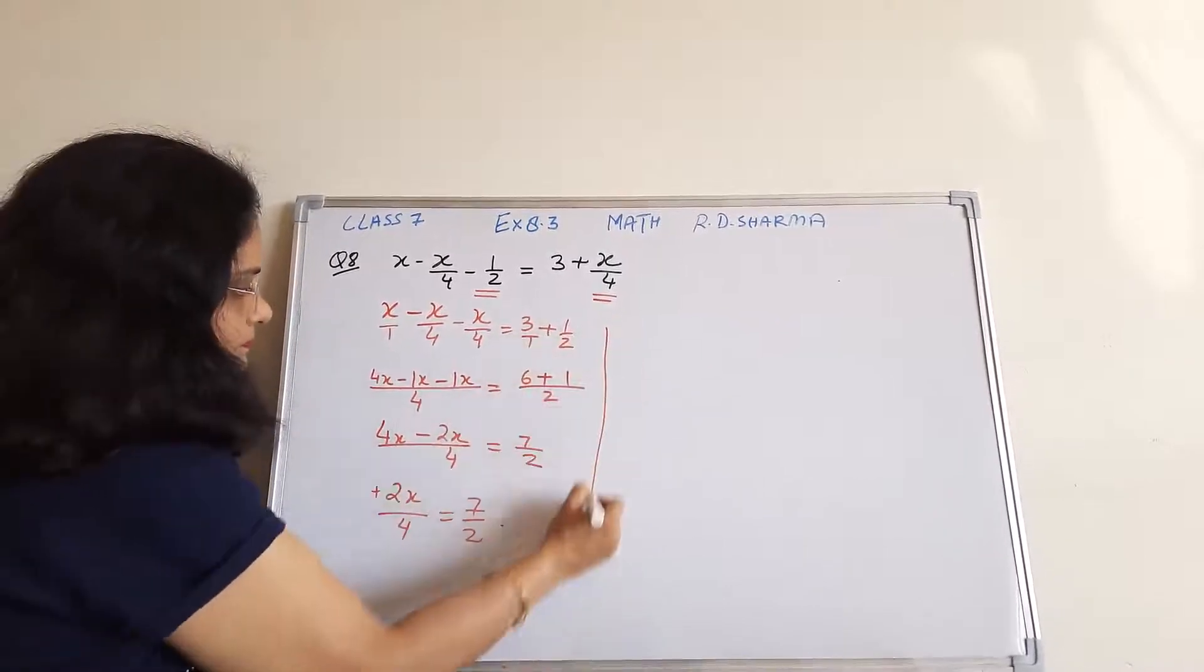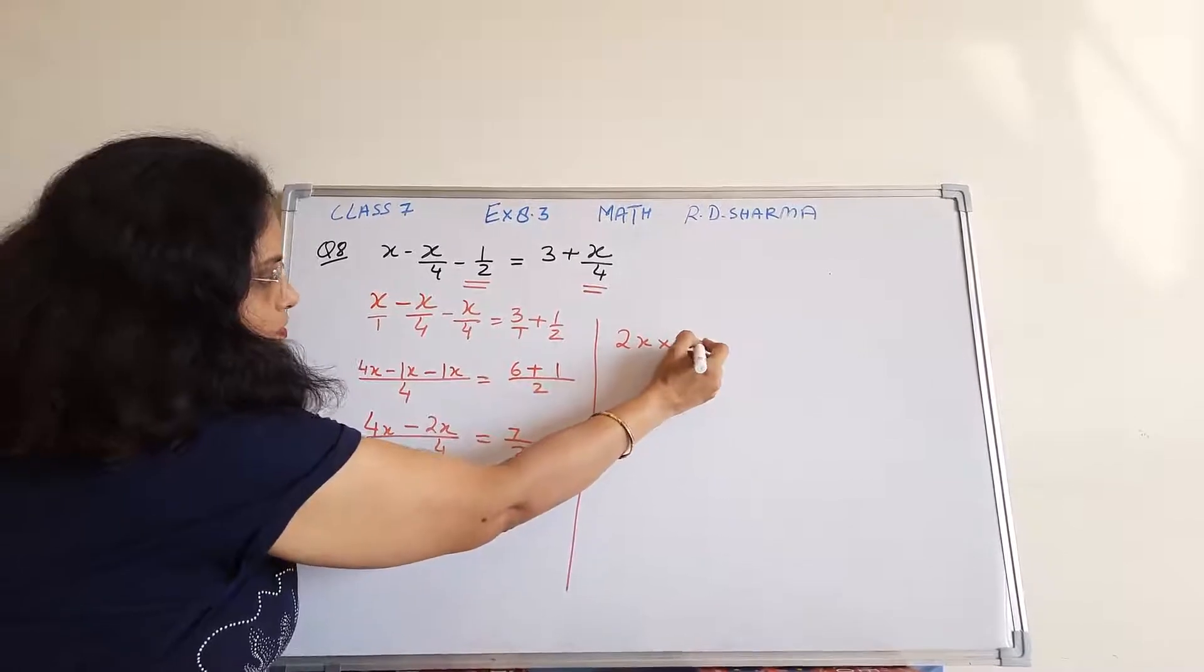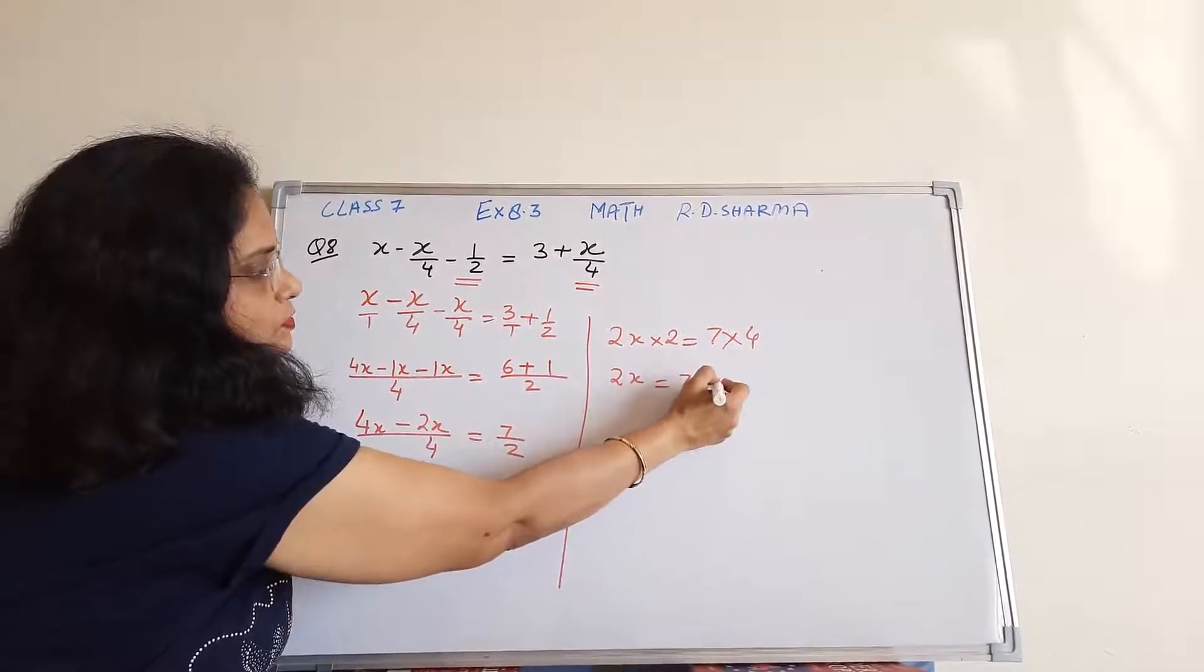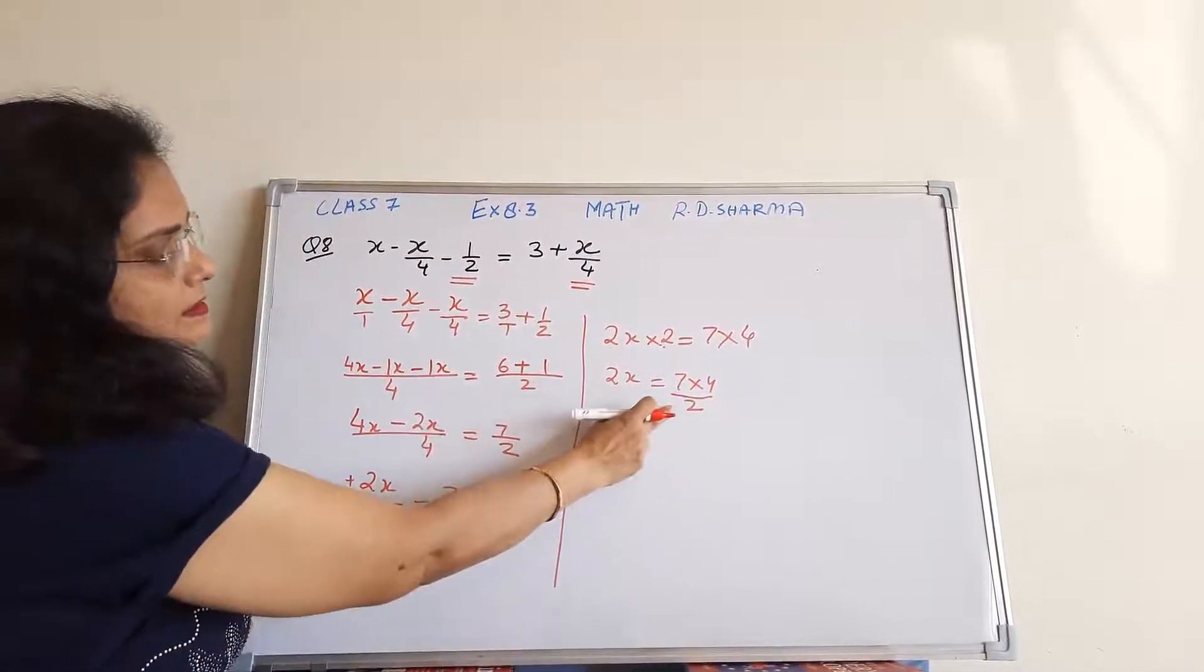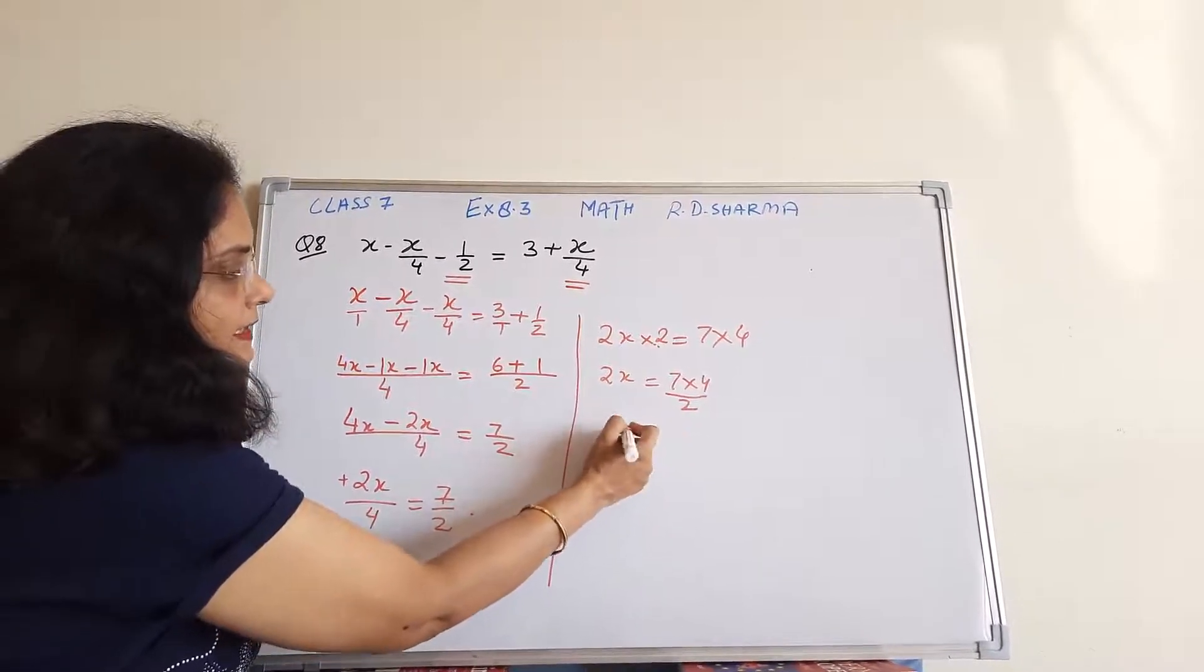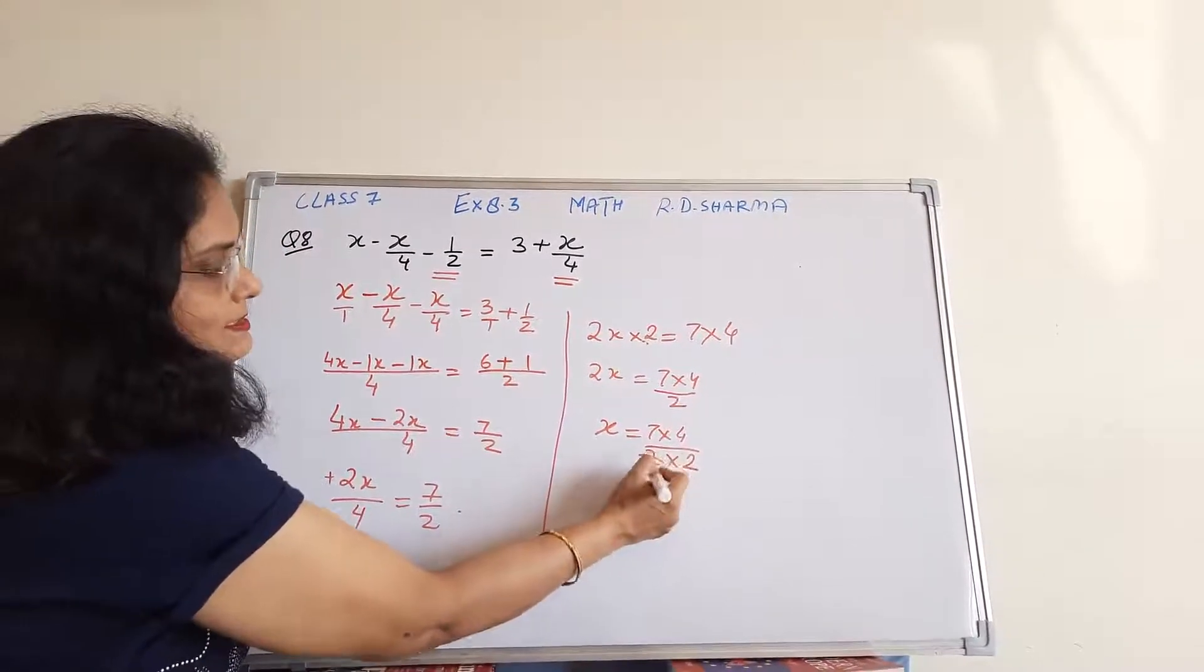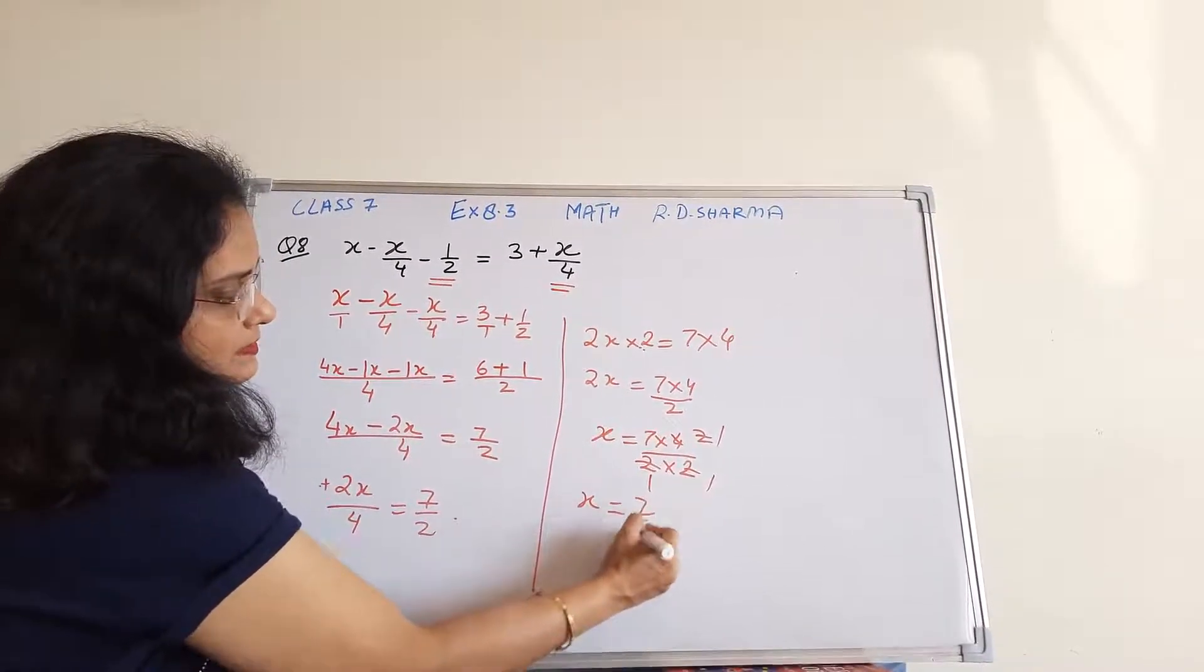Now we will cross multiply. 2x multiplied by 2 is equal to 7 into 4. This 2 will come on the right hand side in the division. Then x becomes 7 into 4 upon 2 into 2. So this gets cancelled. x is equal to 7.